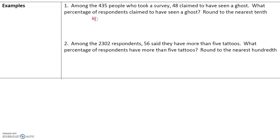We have 48 people out of a total of 435. To figure out the percentage, we take the number of people and divide it by the total — 48 divided by 435. This gives us 0.11034. But we want to find the percentage. To convert from a decimal to a percent, we take the decimal and move it two spaces to the right, or multiply by 100. Either way, we get the same answer.